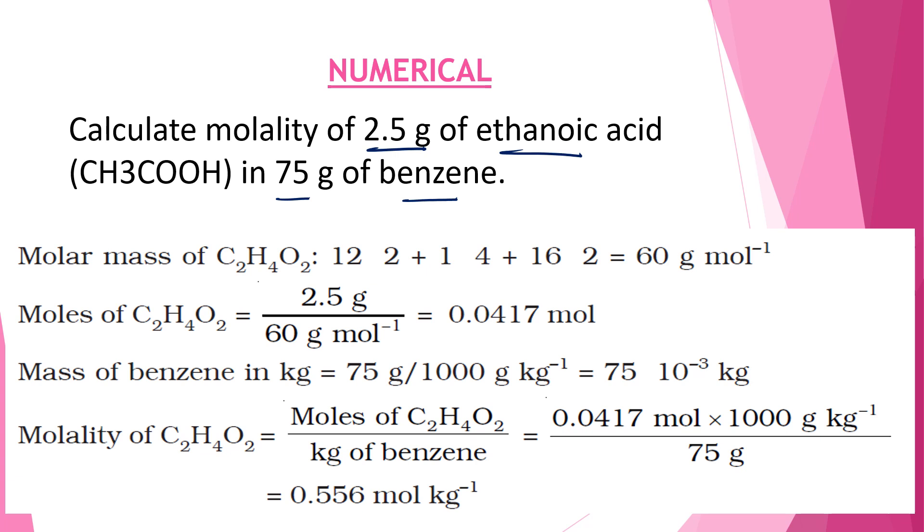Molar mass of C2H4O2, that is ethanoic acid, is 60 gram per mole. The moles of ethanoic acid will be 2.5 divided by 60, which comes out to be 0.0417 moles. Mass of benzene in kg is equal to 75 divided by 1000 because mass of benzene is given in grams.